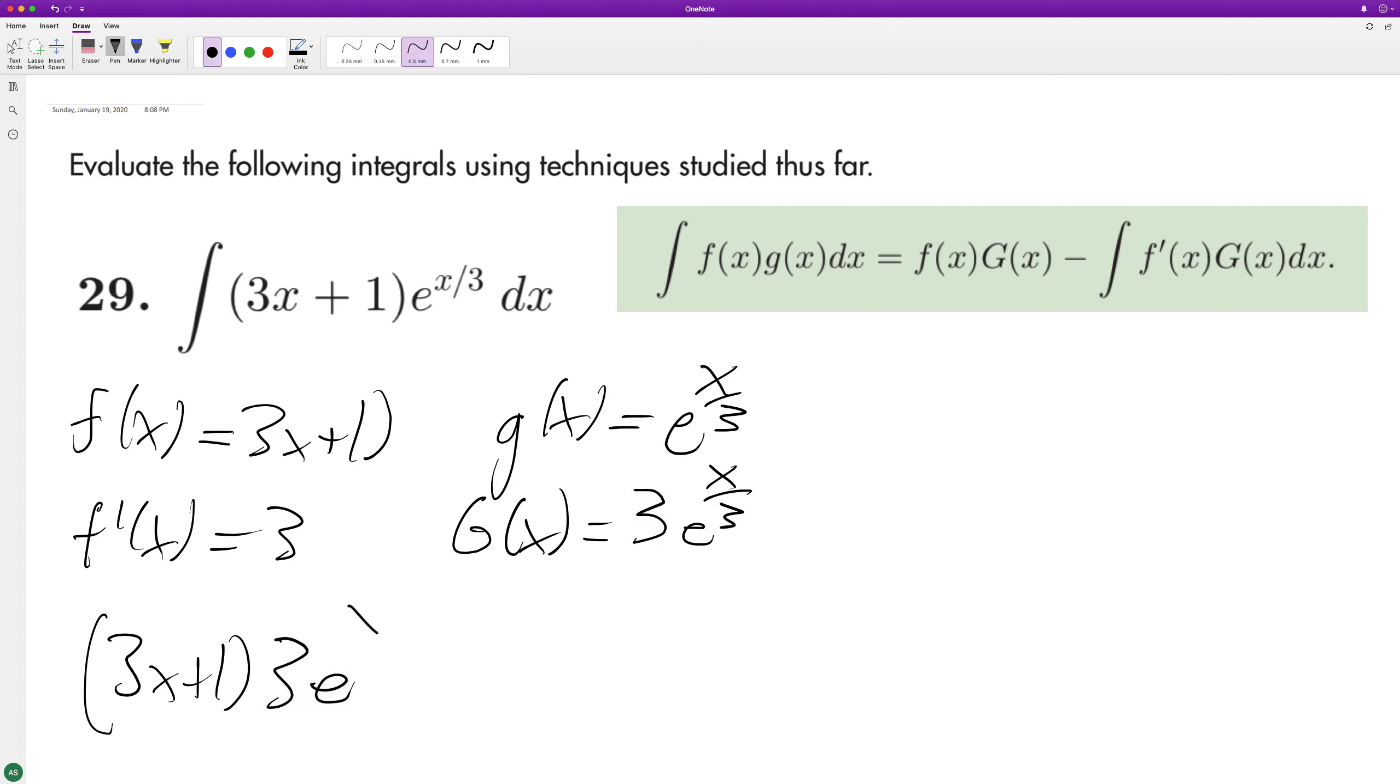Three e raised to the x over three, minus the integral of f prime of x, which is three, times three e raised to the x over three.